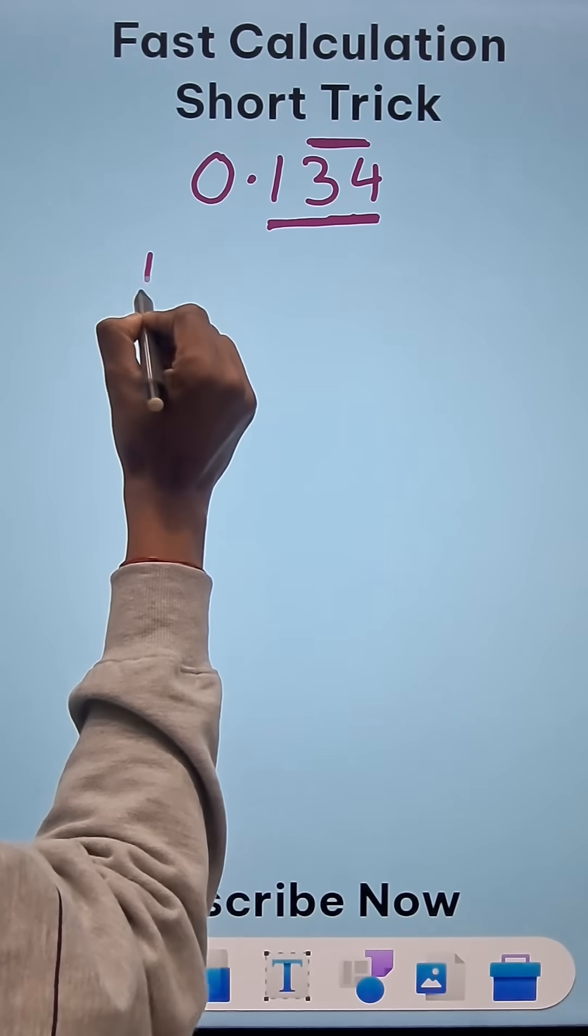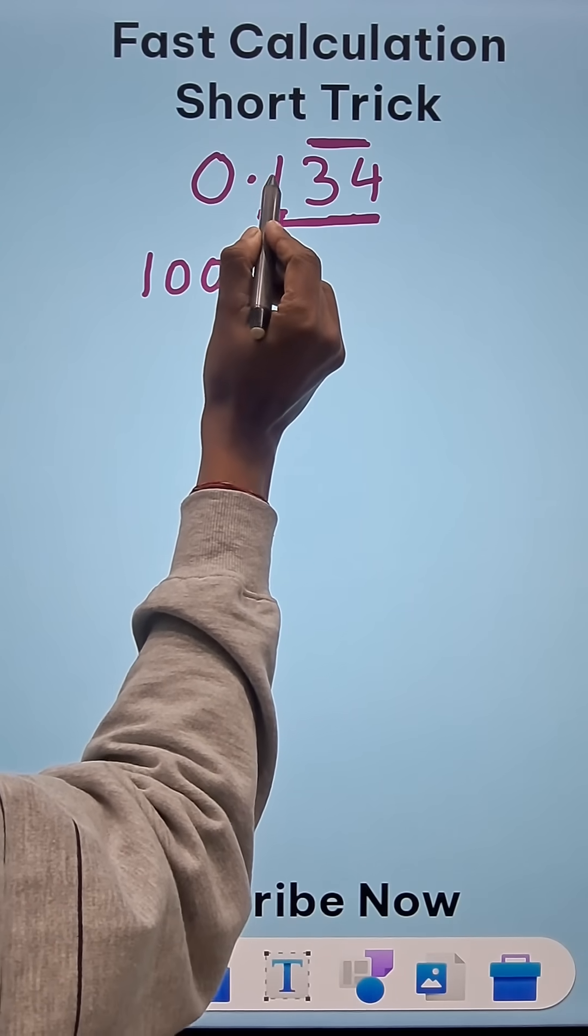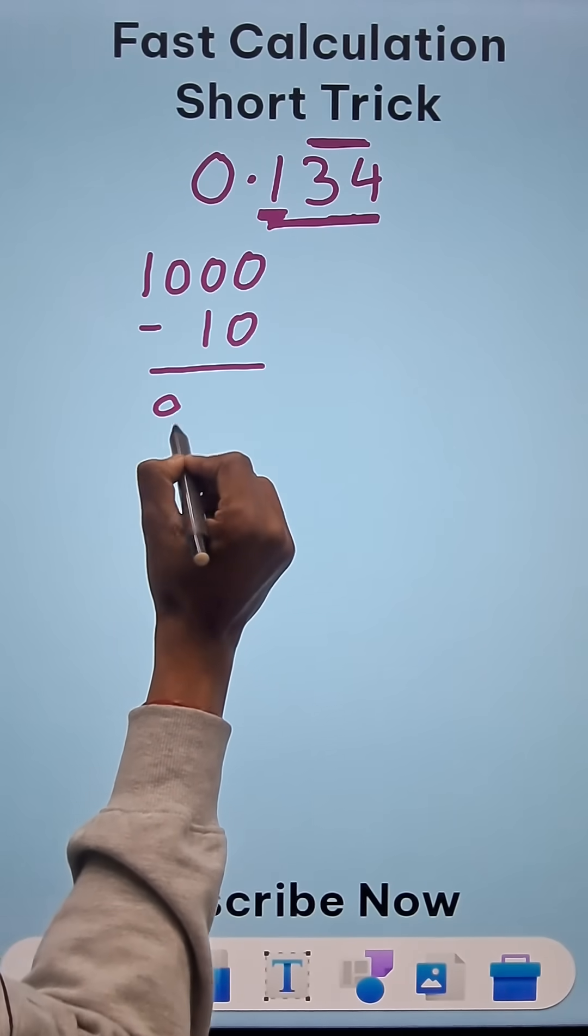So 3 digits means 1000 and there is 1 digit on which there is no bar. So we write a 10, just subtract them, you get 990.